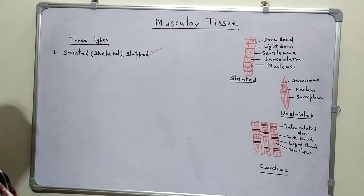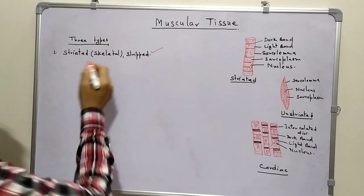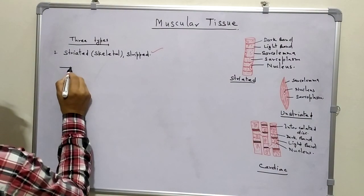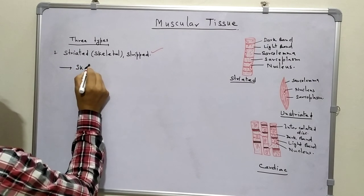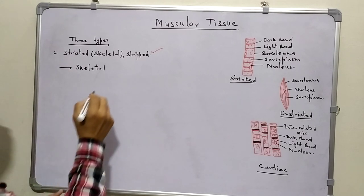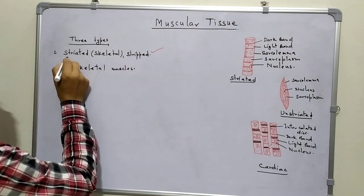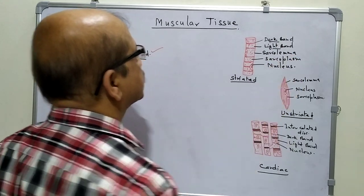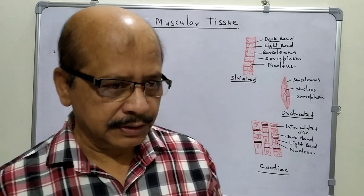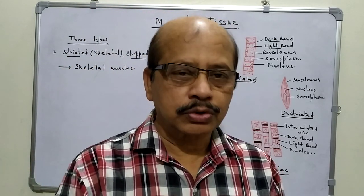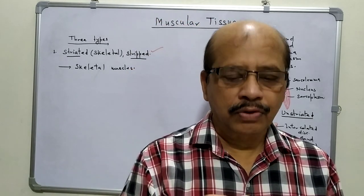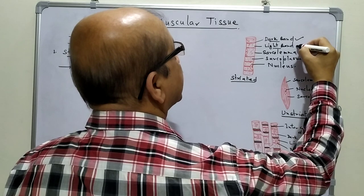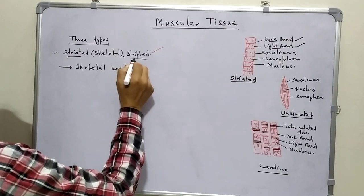First of all, striated or skeletal muscles. As they are attached to bones, they are known as skeletal muscles. Now what is striped and striated? Here dark and light bands are present. These bands contract and relax. During contraction they come closer to each other, and during relaxation they go further from each other. Because of the presence of these light and dark bands, the name given is striated or striped muscles, because these are strips - dark strips and light strips.